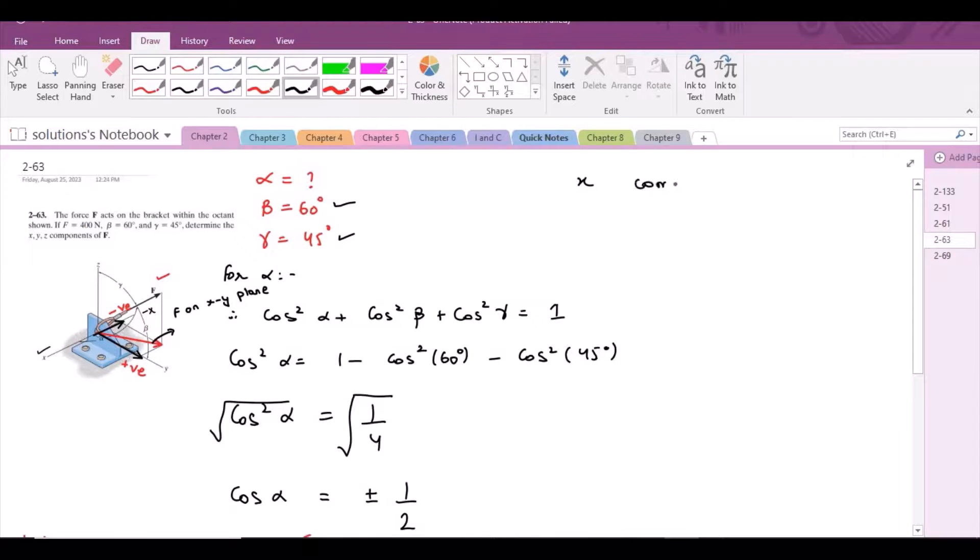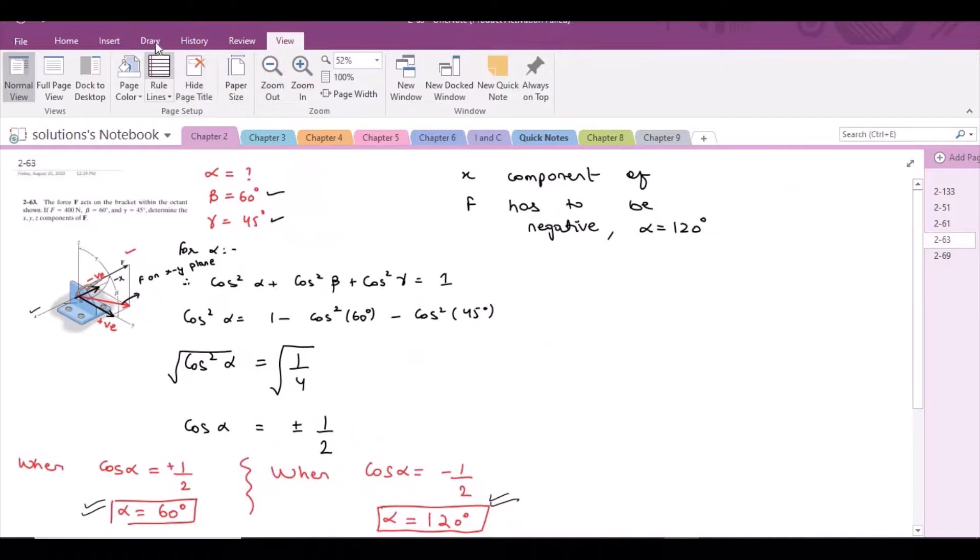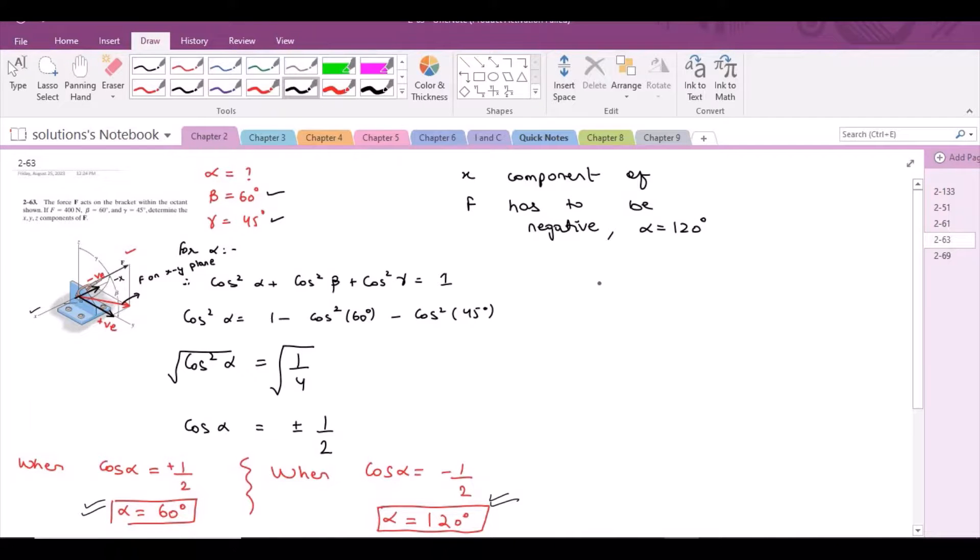The x component of F has to be negative, that's why alpha is 120 degrees. Now it's easy. F = F cos α i + F cos β j + F cos γ k.